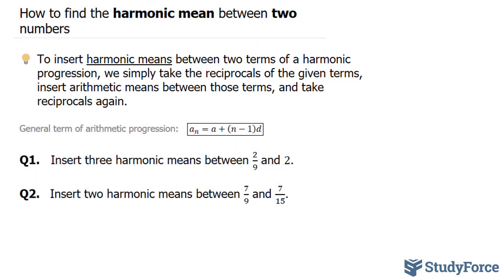The first question reads, insert three harmonic means between 2 over 9 and 2. As suggested earlier, I'll take the reciprocal of these two numbers: 9 over 2, and this 2 becomes 1 over 2.